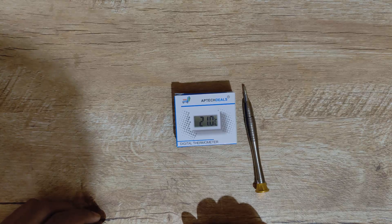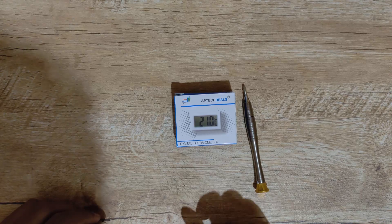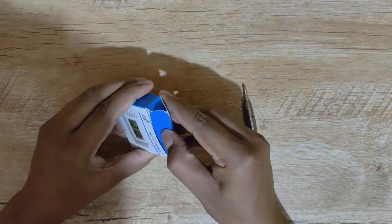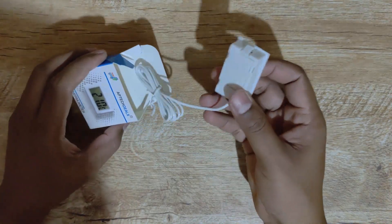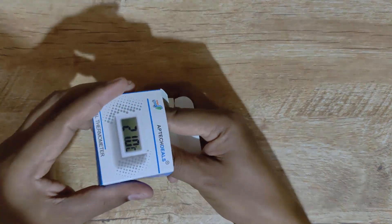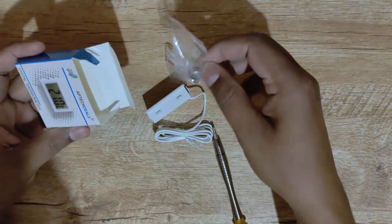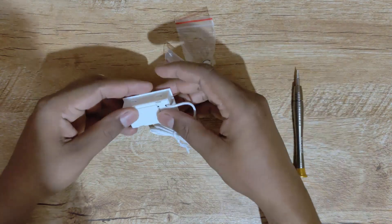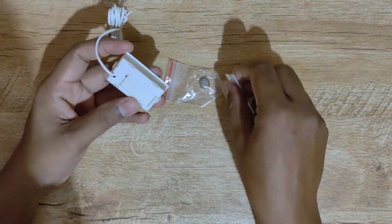Hello everyone, in this video we will be opening a digital thermometer and we will try to find out what components it has inside. So without any further delay, let's get started. This is a thermometer and along with this we will get two batteries. We need to put the two batteries inside it.